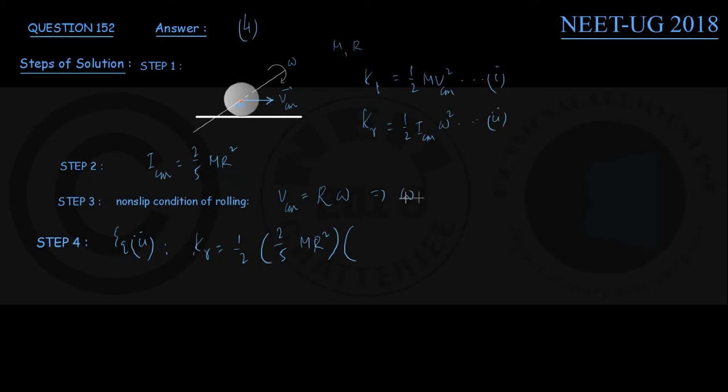Well, you can see here if VCM equals R times omega, then omega is VCM divided by R. So we put that here: VCM by R, and this quantity is whole squared.